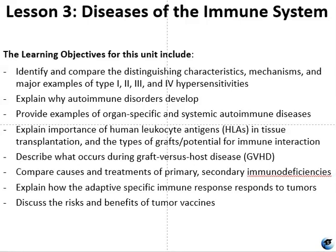The learning objectives for this unit are to identify and compare distinguishing characteristics, mechanisms, and examples of type 1, 2, 3, and 4 hypersensitivities. We will explain why autoimmune disorders develop, discuss examples of organ-specific and systemic autoimmune diseases, the importance of human leukocyte antigens (HLAs) in tissue transplantation, grafts and the potential for immune interactions, what occurs during graft versus host defense, causes and treatments of primary and secondary immune deficiencies, how the adaptive immune response responds to tumors, and the risks and benefits of tumor vaccines.